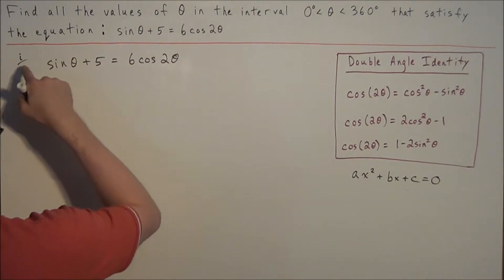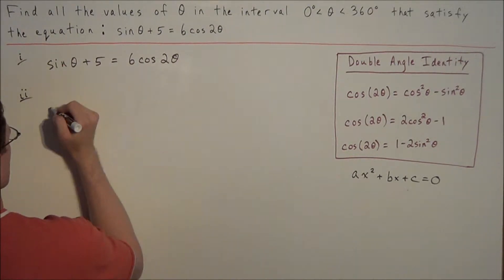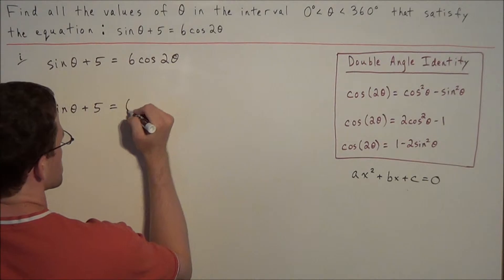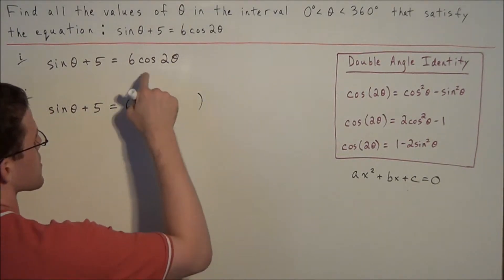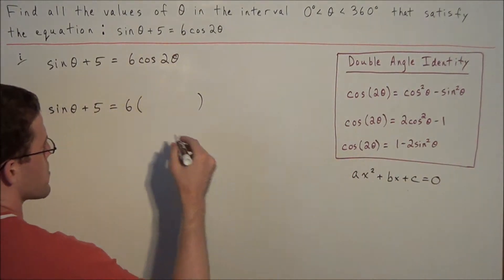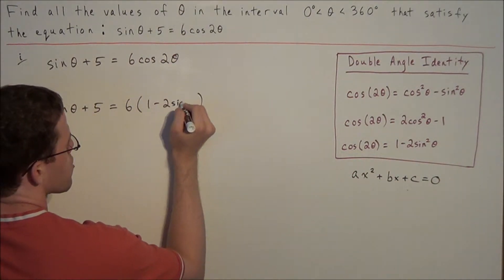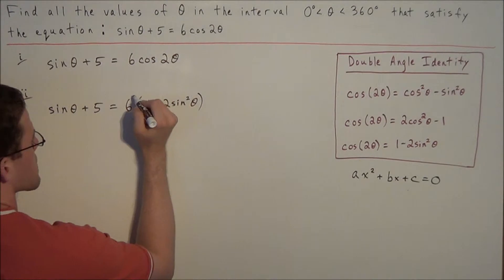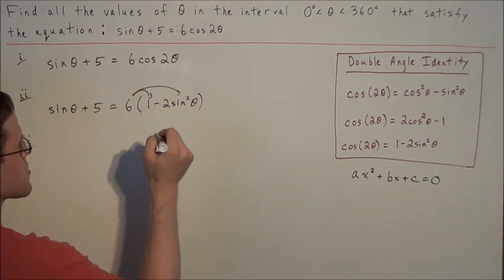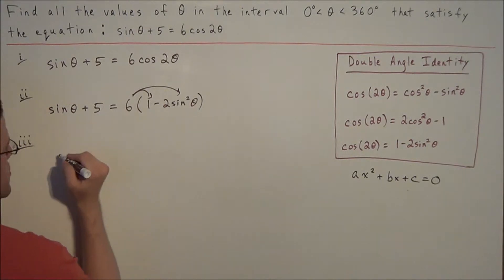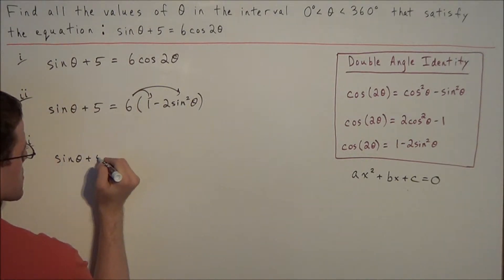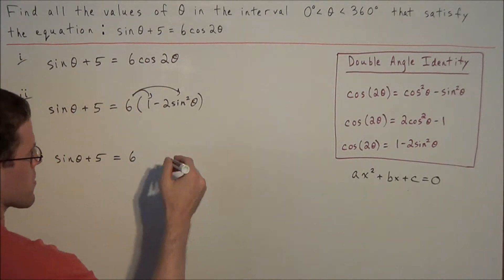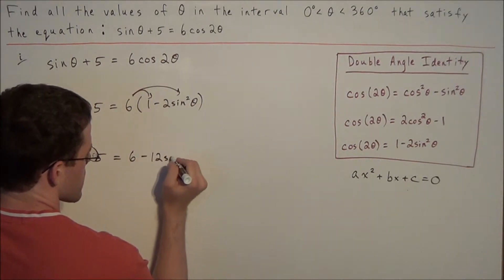For step 2, we make the substitution. We have sine theta plus 5 equals 6 times, and we replace cosine 2 theta with 1 minus 2 sine squared theta. Then we distribute: 6 times 1 is 6, and 6 times negative 2 sine squared theta is negative 12 sine squared theta. So the line reads: sine theta plus 5 equals 6 minus 12 sine squared theta.